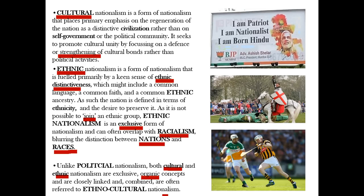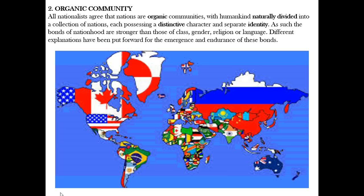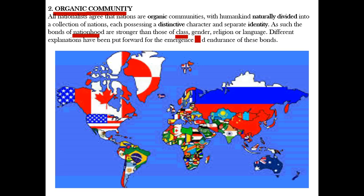The second core theme is organic community. All nationalists agree that nations are organic communities, with humankind naturally divided into a collection of nations, each possessing a distinctive character and separate identity. The bonds of nationhood as an ideology are stronger than those of class for socialists, or gender for feminists, or religion or language. Different explanations have been put forward for the emergence and endurance of these bonds within this organic community.